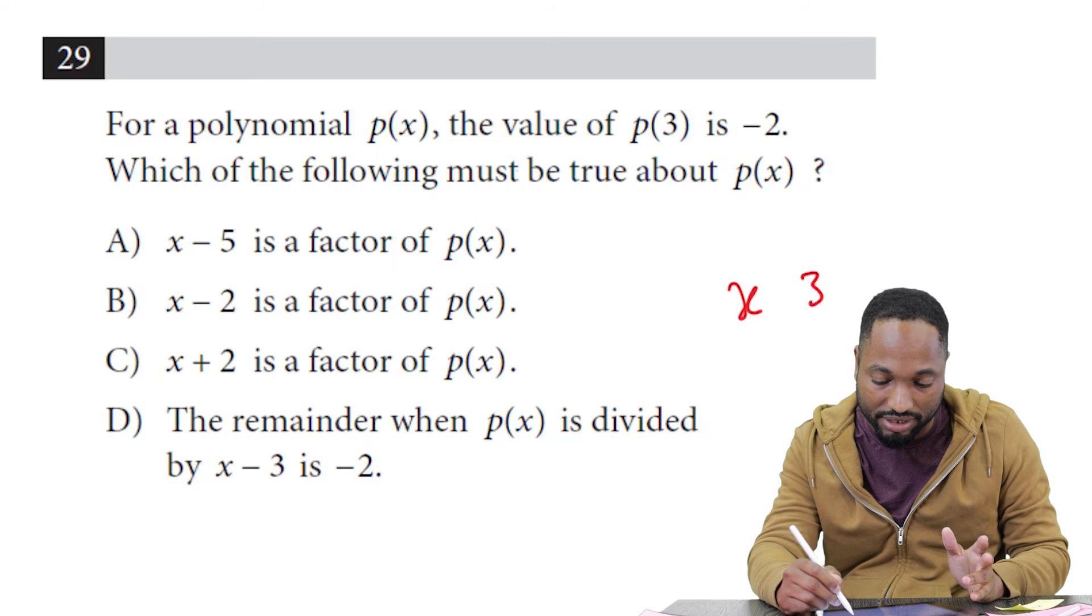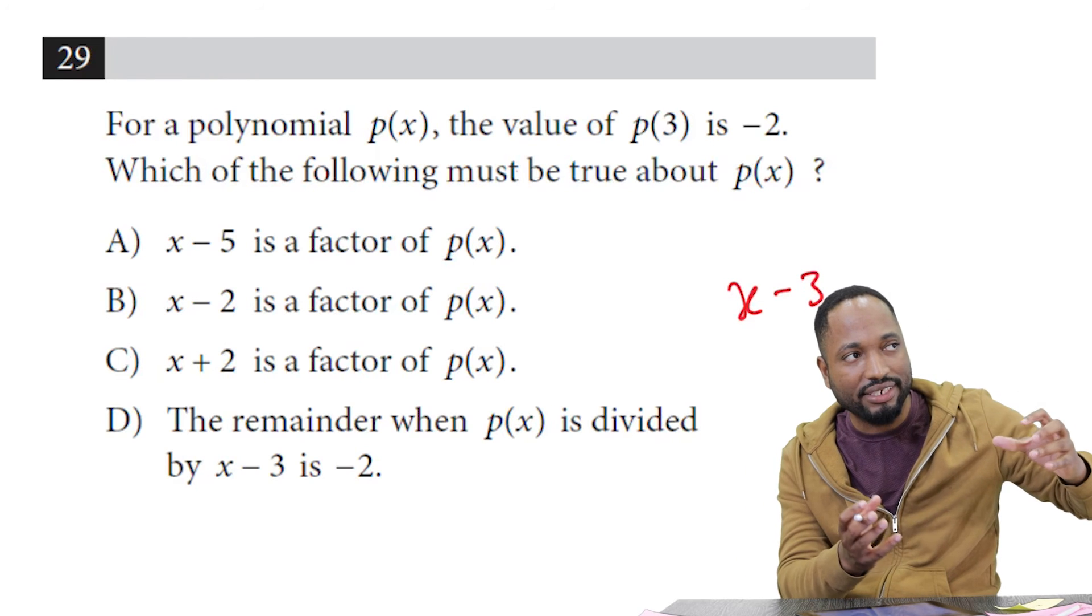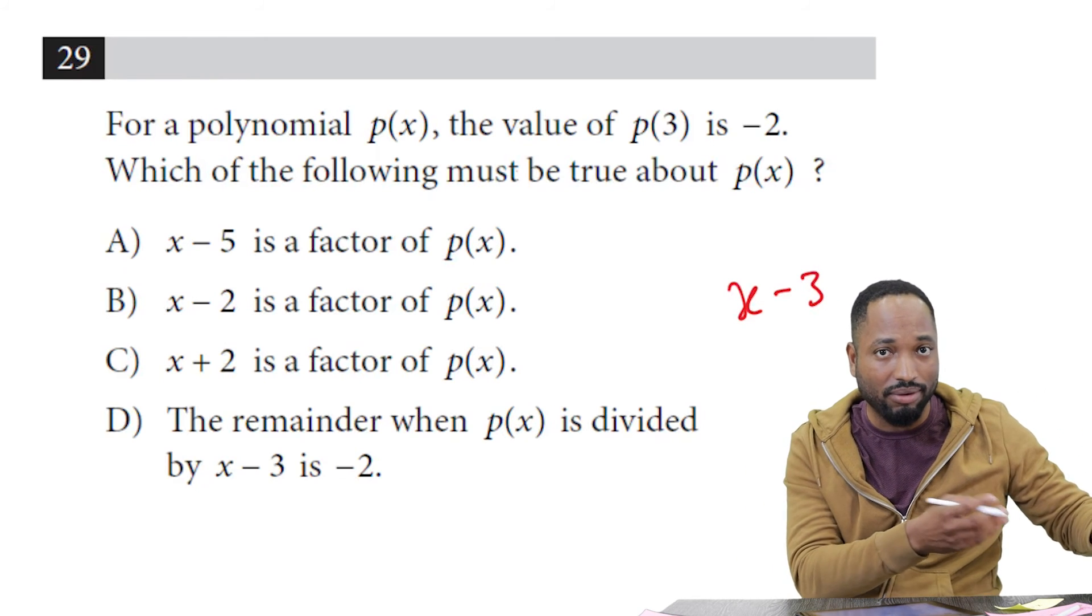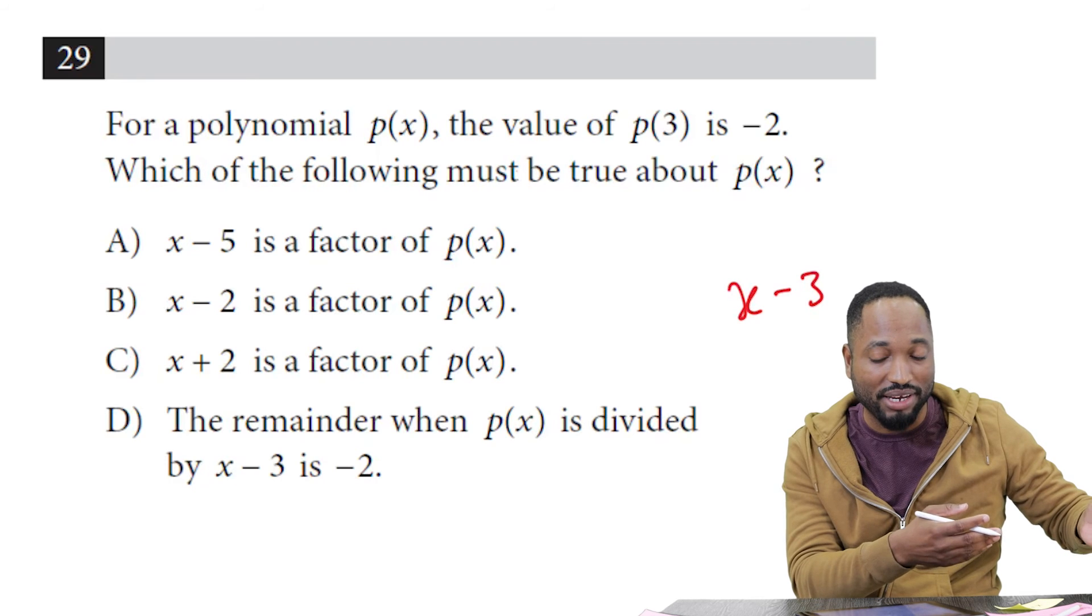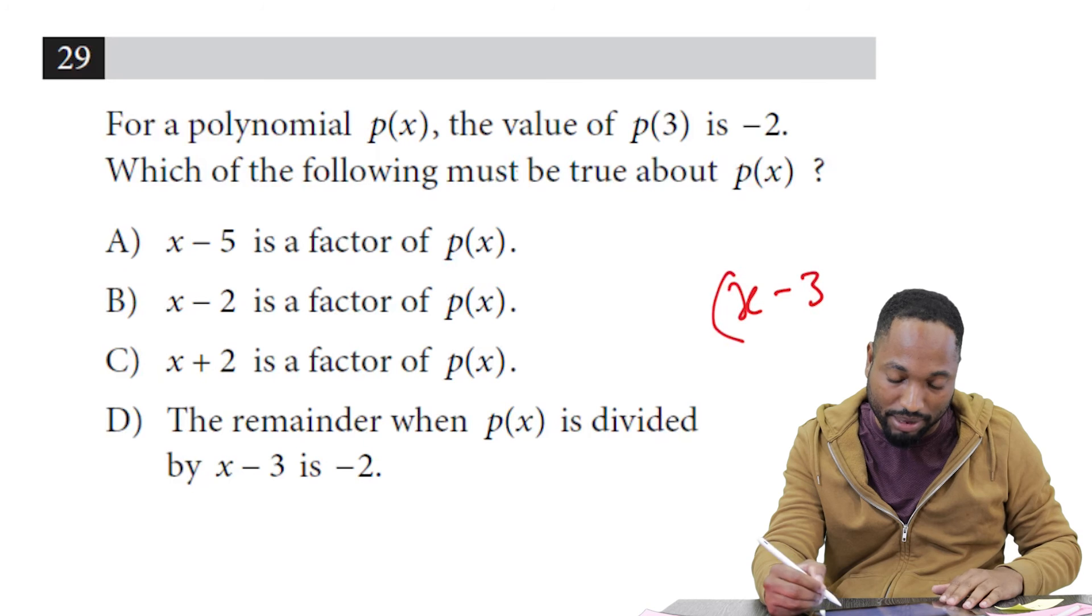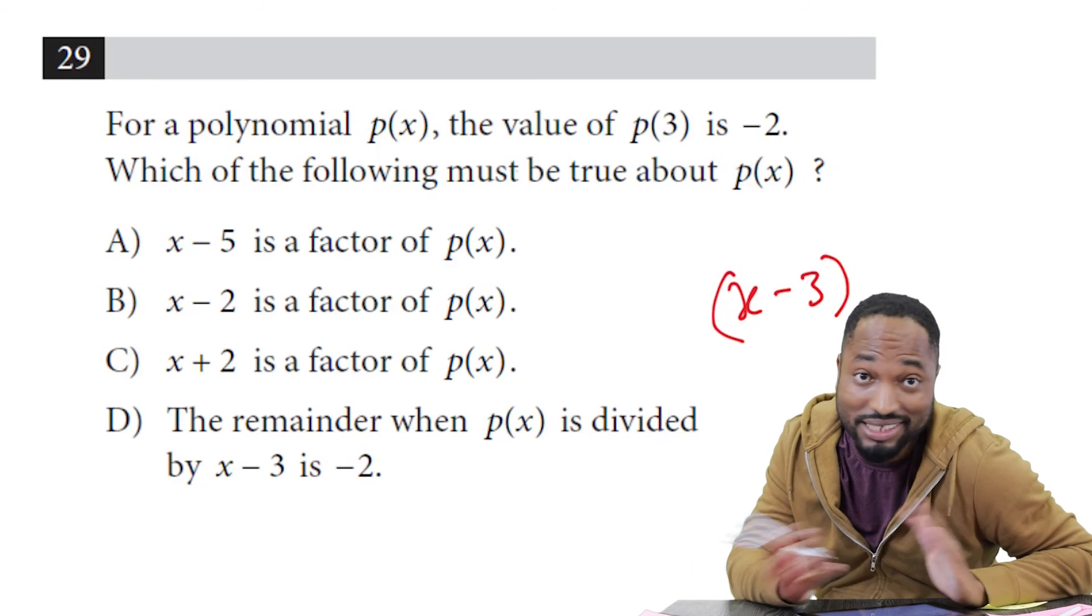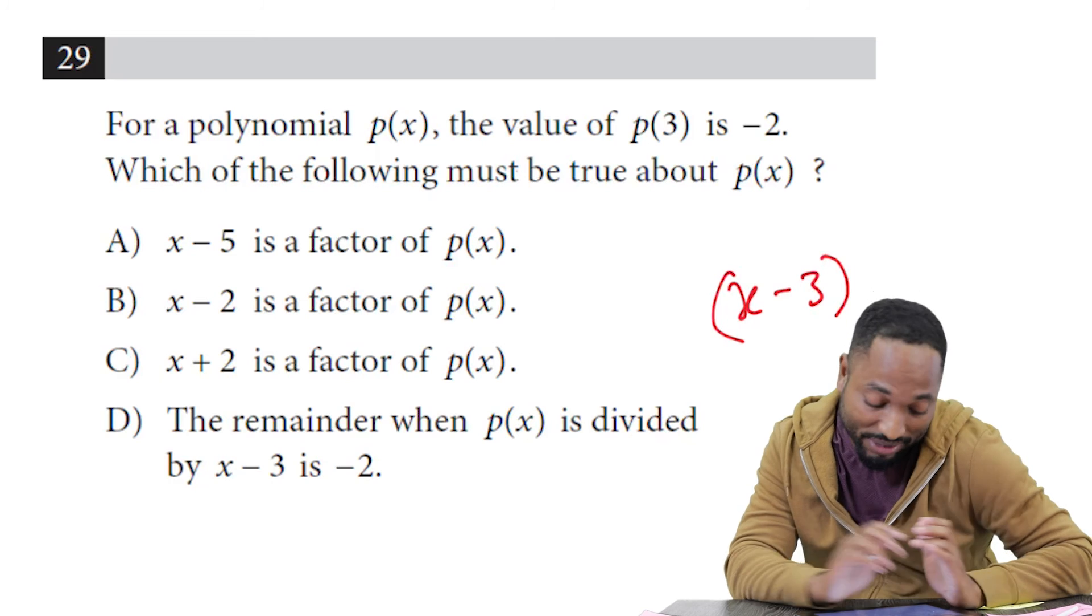So we substituted 3, but instead of getting zero, which would mean that x - 3 is a factor, we got -2. So the idea is if you actually get a remainder, well, that's the remainder. So if you substituted 3 from the factor x - 3 and you got -2 as the remainder, it just means that that is the remainder when you try to divide.